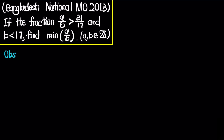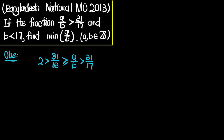To solve this problem, I'll begin by observing that the fraction 31 over 16 works for this case because b is less than 17, and this is obviously bigger than 31 over 17. So this means the minimum value of a over b must be bigger than or equal to a over b, and bigger than 31 over 17. Therefore 31 over 16 is less than 2, which tells us that 2b is bigger than a. Furthermore, we can note that 31 over 17 is bigger than 1, so a is bigger than b.